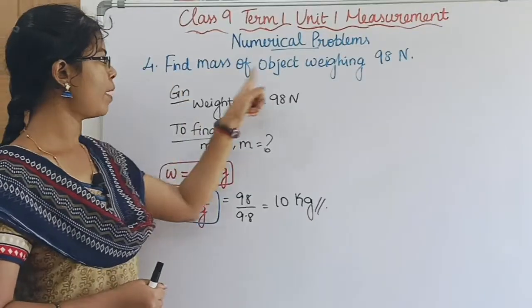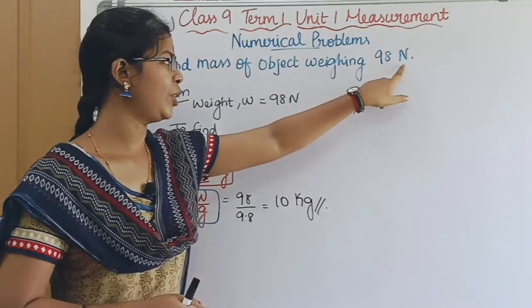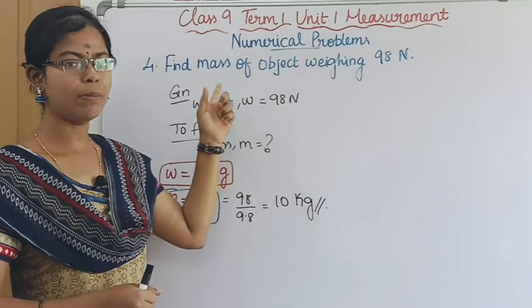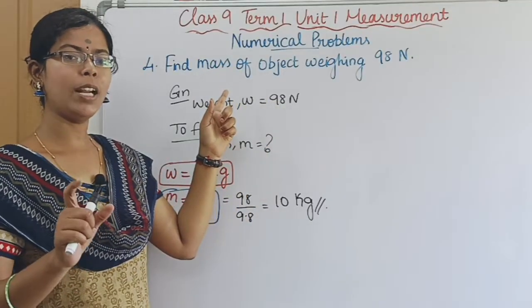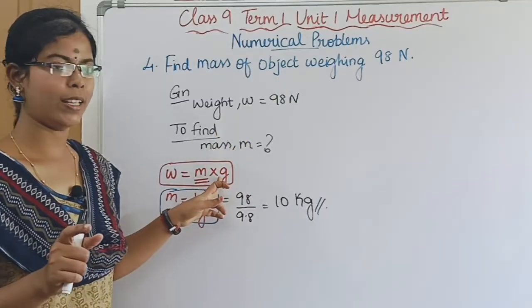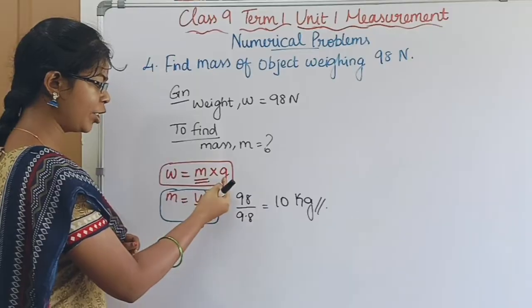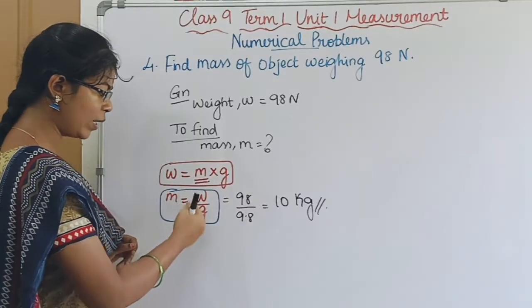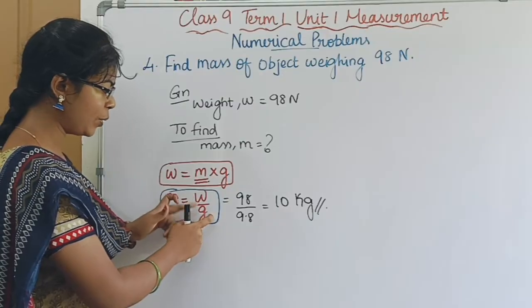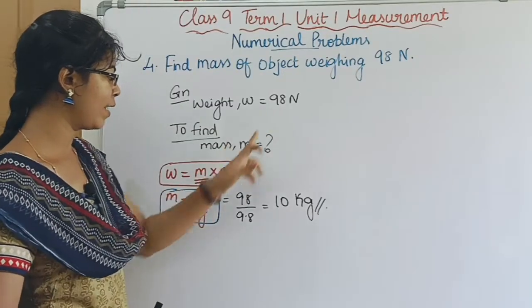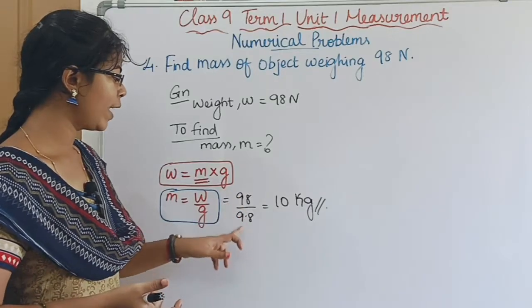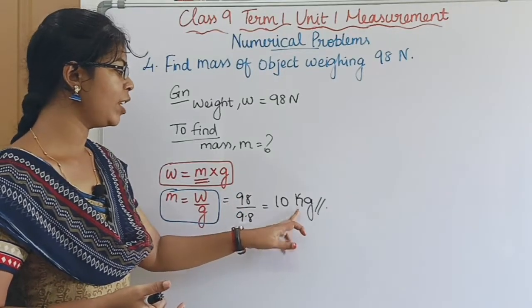Fourth problem: find the mass of an object weighing 98 N. The formula is Weight = Mass × Gravity. To find mass, we rearrange: Mass = Weight / Gravity. Substituting: Mass = 98 N / 9.8 m/s² = 10 kg. So the mass of the object is 10 kg.